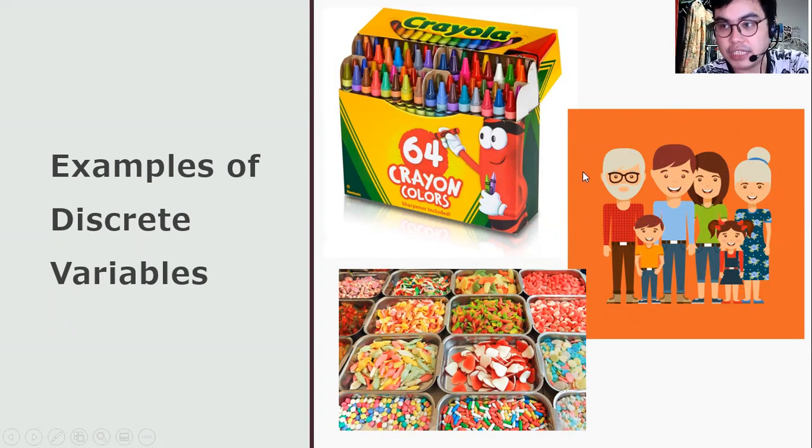How about the trays of candies and gummies? We usually see these candies at candy kiosks, especially candy corners. We can count one, two, three, four, five, six, seven, eight, nine, 10, 11, 12, 13, 14, 15. The number 15 makes this variable discrete.